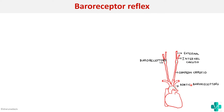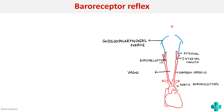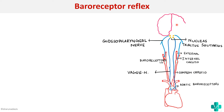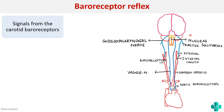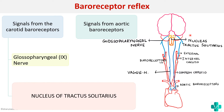Whenever there is a change in BP, it will be detected by these baroreceptors, and the information will be conducted to the brain via specific nerves. From the carotid sinus, information travels via the glossopharyngeal nerve, whereas from the aortic baroreceptors, it passes via the vagus nerve. Both reach the nucleus of tractus solitarius, present in the brain — this is how information from baroreceptors reaches the medullary center.